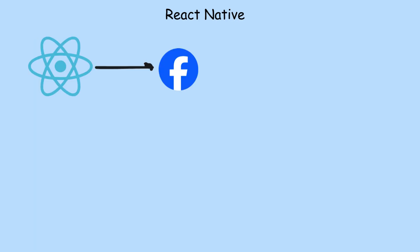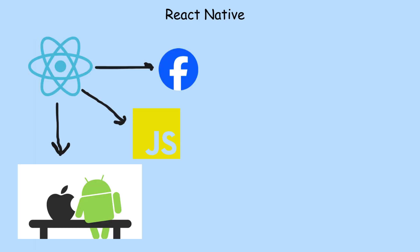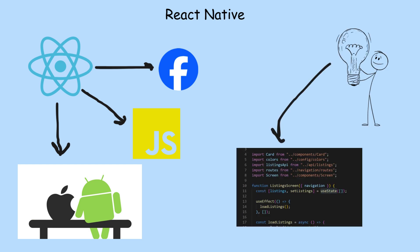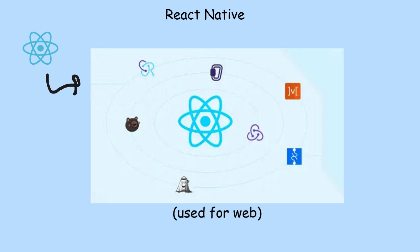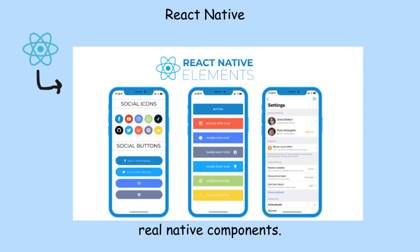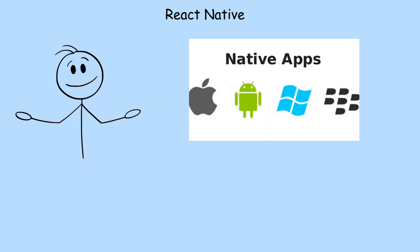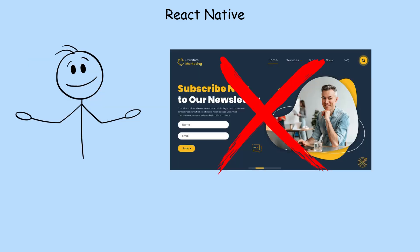React Native. Created by Facebook, React Native uses JavaScript to build apps for both Android and iOS. The idea is simple: one code base that works on two platforms. It's powered by the React library, which is used for web, but instead of web elements, it renders real native components. That means your app feels like a native app, not a web page in disguise.